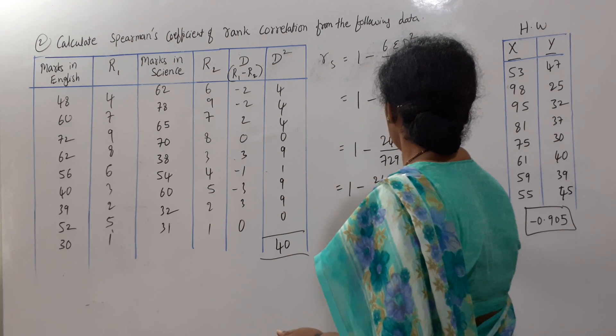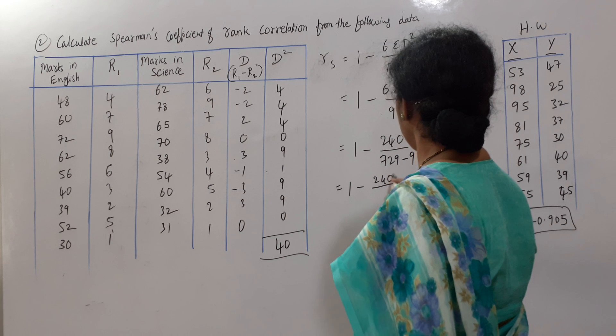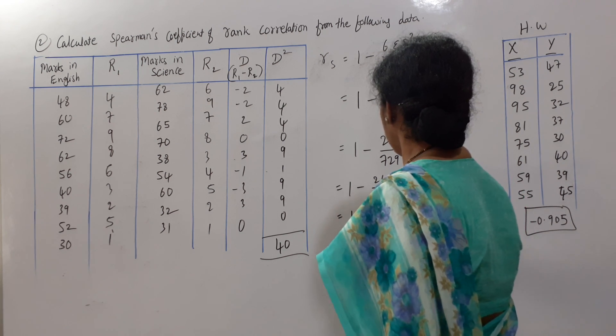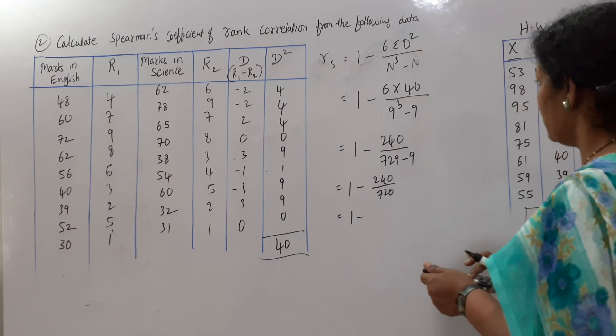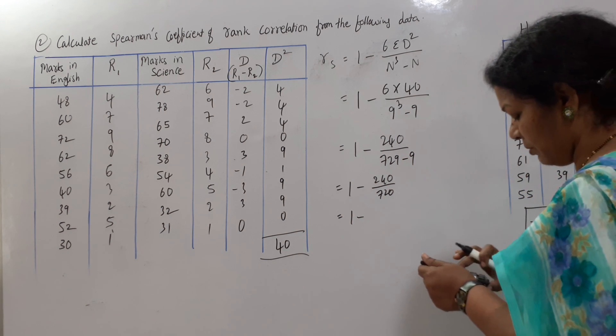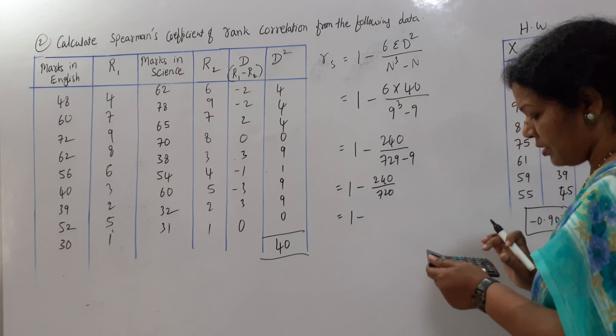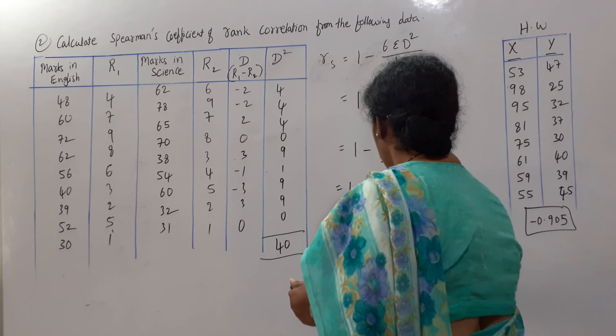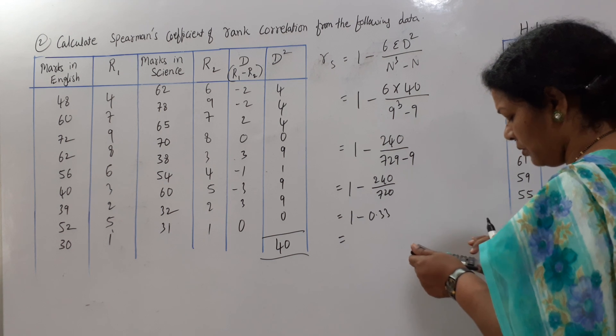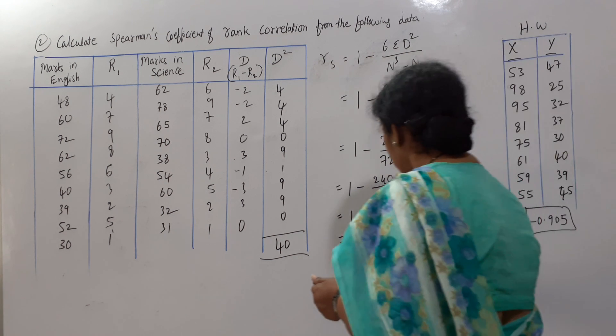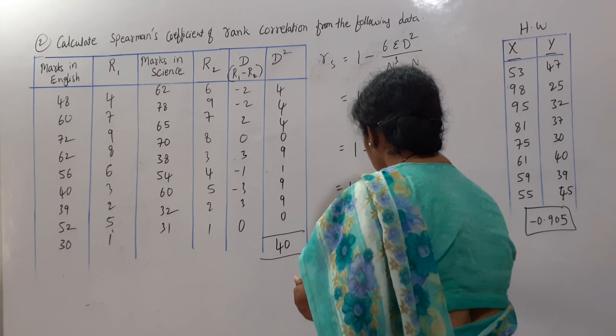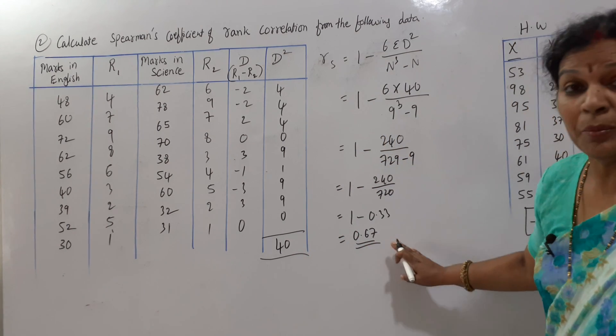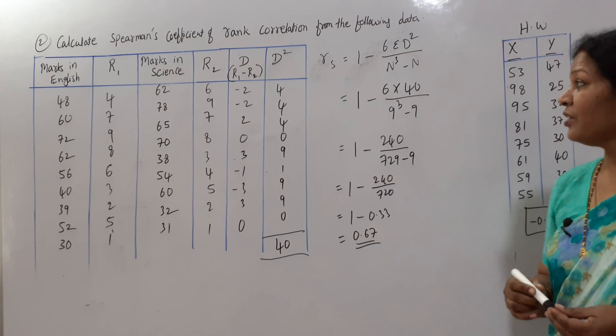1 minus 240, 240 divided by 720, comes to 0.33, 1 minus 0.33 comes to 0.67, answer is 0.67, but it is in plus value, right? So, am I clear? Take a screenshot, I will give you a recap.